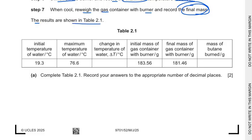The results are shown in table 2.1, and we need to complete the table 2.1. Record your answer to the appropriate number of decimal places. Here is the initial temperature and the maximum temperature. The change in temperature is the subtraction of these two temperatures, so we get 57.3 degrees Celsius. Now the initial mass of the gas container and the final mass - the mass of butane, we need to subtract these two values and it is 2.10 gram. So 2.10 gram of butane is used to heat the water and the temperature rises 57.3 degrees Celsius.